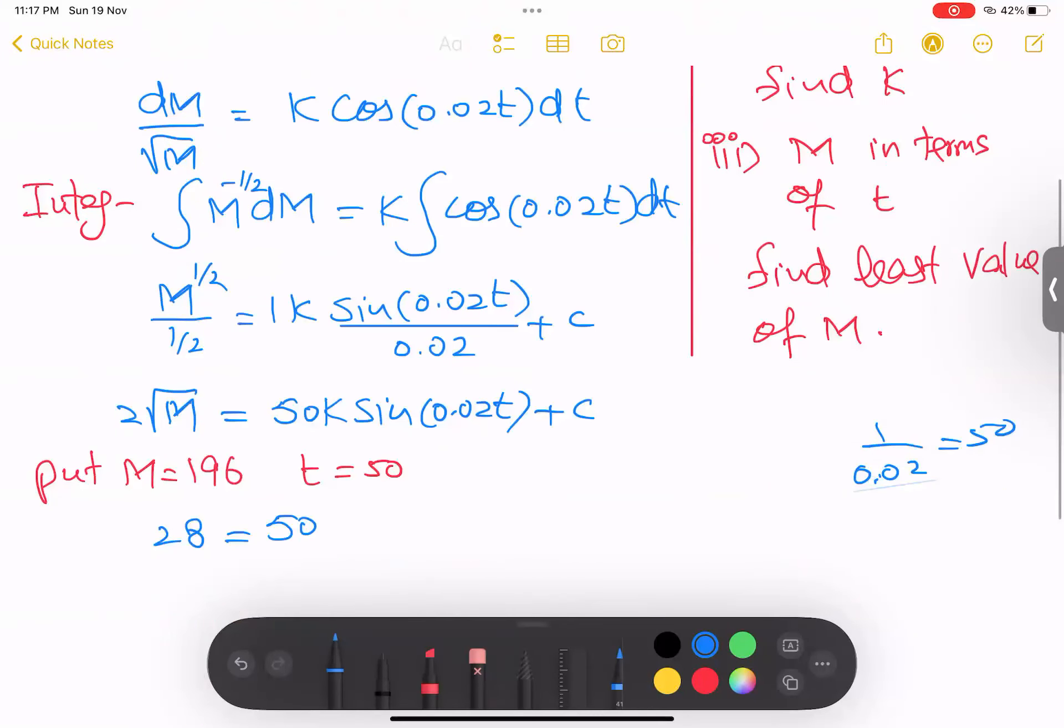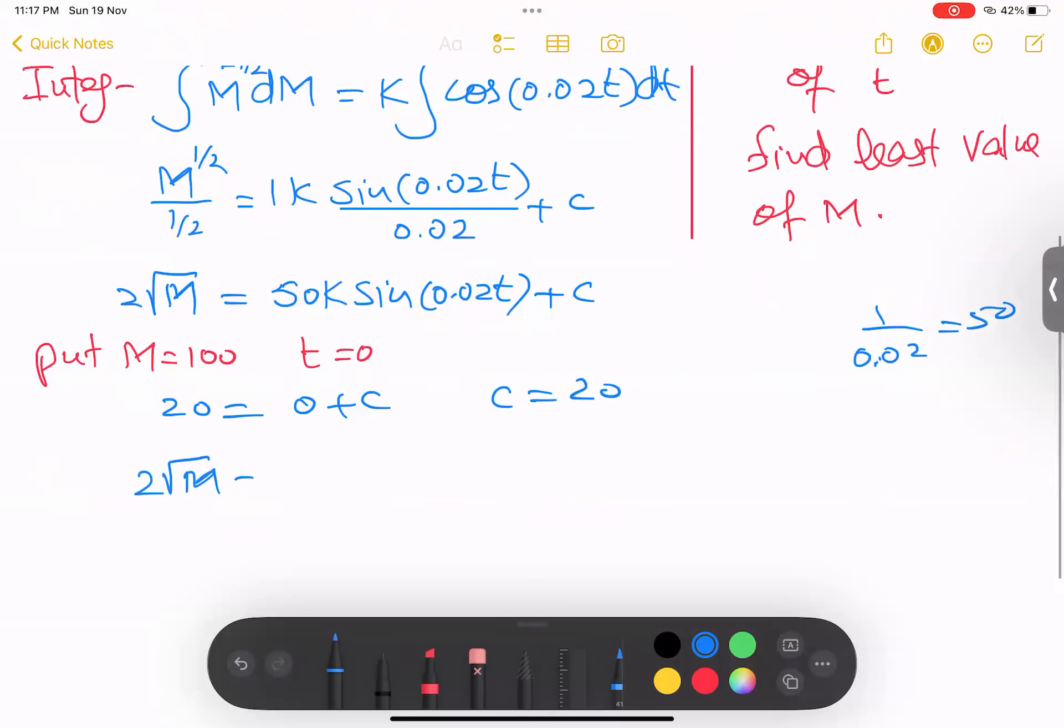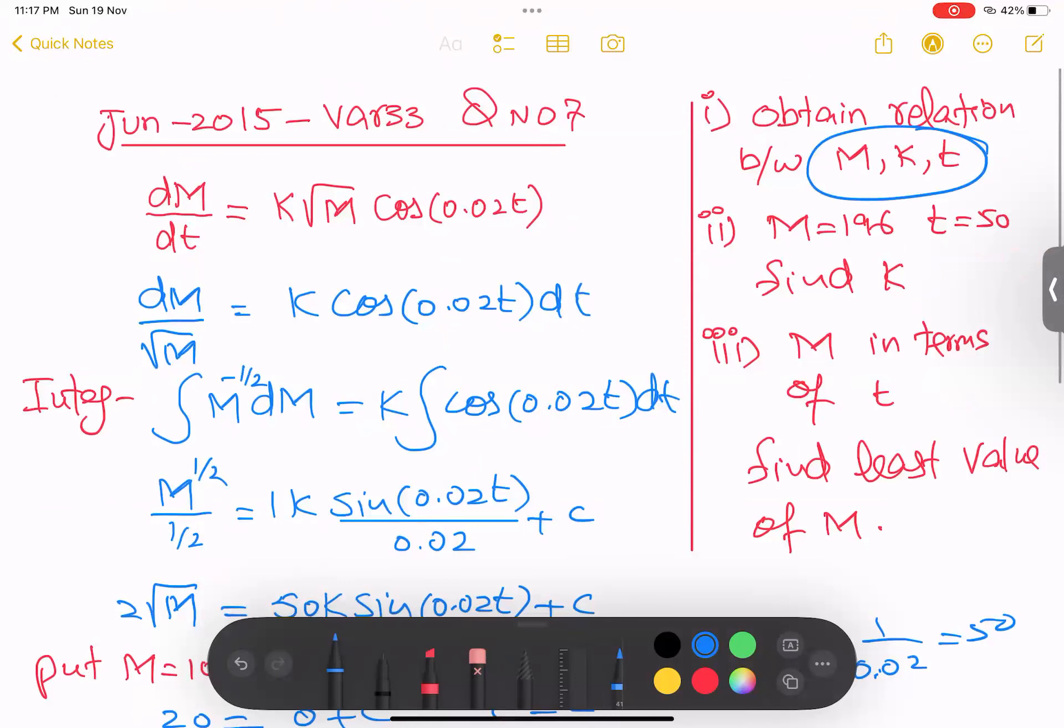T=0, M=100. So this relationship I missed. So when I plug in first, this one, T=0, M=100. So this will help us to get C value. 100 root is 10, 10 to the 20. So I got 20. And when I plug in 0 here, sine 0 is 0. So it means 0 plus C value is 20. This 20 back in equation here. So I get 2 root of M equal to 50K sine of 0.02T and plus 20. So my first relationship is over because he was asking us that we should make a relationship between M and KT and I have done it.